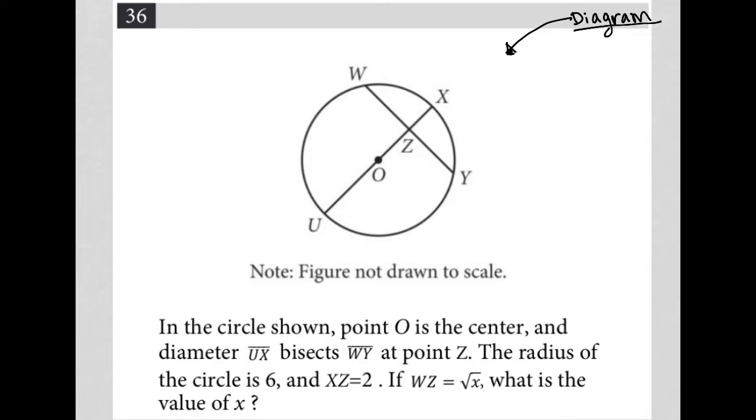We obviously have a circle here. This circle looks like it has diameter between U and X. And we have this other chord here between W and Y. And then Z looks like where these two points intersect.